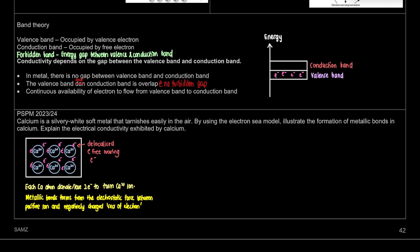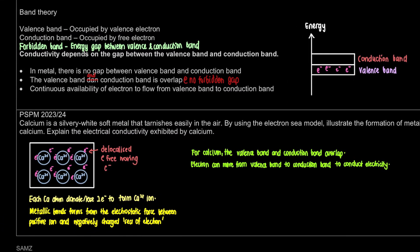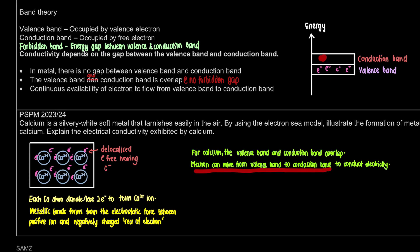The next question asks: explain the electrical conductivity exhibited by calcium. There are two ways to explain it — one using mobile electrons, and one using band theory. Using band theory: for calcium, the valence band and conduction band overlap, or there is no forbidden gap. You don't need to explain what each band is or draw a diagram — just mention they overlap. This means electrons can move from the valence band to the conduction band, giving free-moving electrons.